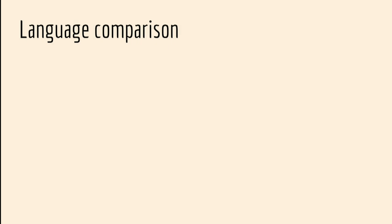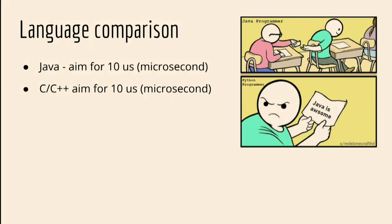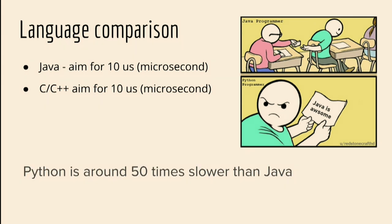Let's try to compare some languages. Why are we speaking about Java and not C++ or Python? Probably all of you write some code in Java. Java is about 10 microseconds — if you want to write code that runs in 10 microseconds, Java is a good choice. If you need to go lower than that, please don't use Java. With C and C++ you can do almost the same, but you need to hire one of the best C++ developers. Where is Python? It's around 50 times slower than Java, so Python is not going to be used for low latency systems.